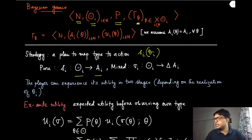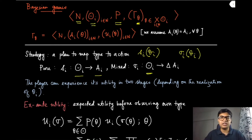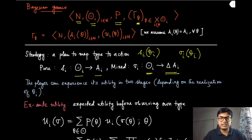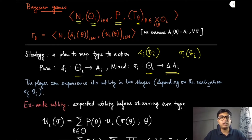Similarly, the mixed strategy is a probability distribution over the same action set A_i for a particular type theta_i. So sigma_i(theta_i) is the mixed strategy when the type of player i is theta_i, and that lives in the simplex — the collection of all probability distributions over the elements of capital A_i.